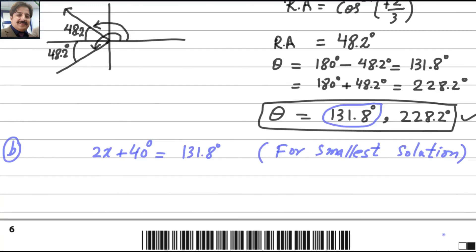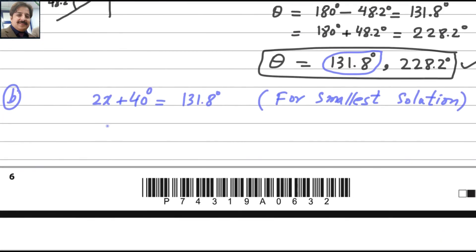From 2x + 40° = 131.8°, subtract 40°: 2x = 131.8° − 40° = 91.8°. Divide by 2: x = 45.9°. So the answer for the second part is x = 45.9°.